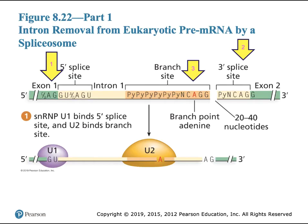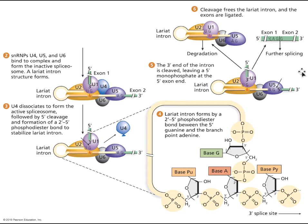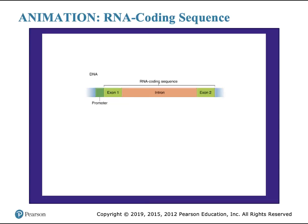A protein factor called U1 binds to the 5' splice site. A second protein, U2, binds to the branch point adenine. Three other proteins — U4, U5, and U6 — are recruited to form a complex with U1 and U2, known as the inactive spliceosome. The active spliceosome is formed when U4 disassociates from the complex. The spliceosome then cuts at the 5' cleavage site, forming a looped lasso-like lariat structure of the pre-messenger RNA at each intron.